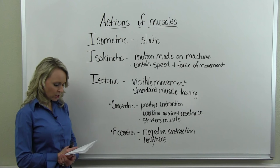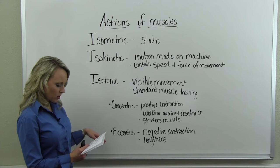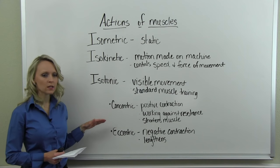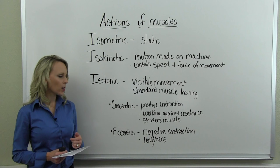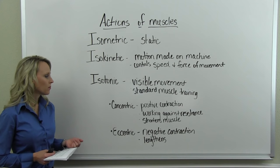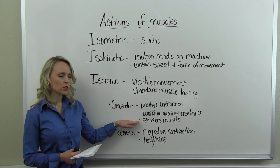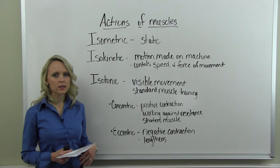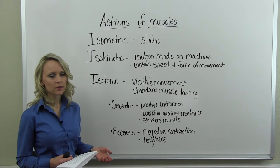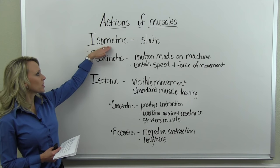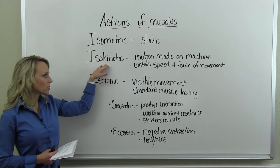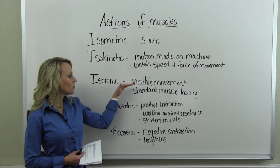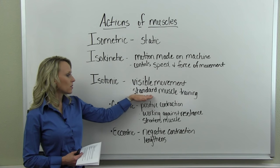Isotonic or dynamic action moves the muscle visibly. It is the motion most often associated with standard muscle training and can be broken down into two phases. The concentric phase is the positive contraction — usually the lifting action — working against resistance, causing a shortening of the muscle. The eccentric phase is the negative contraction, which causes lengthening — it is typically the extension phase of the exercise. So muscles can perform isometric, isokinetic, or isotonic action, the last being what's typically referred to in standard muscle training.